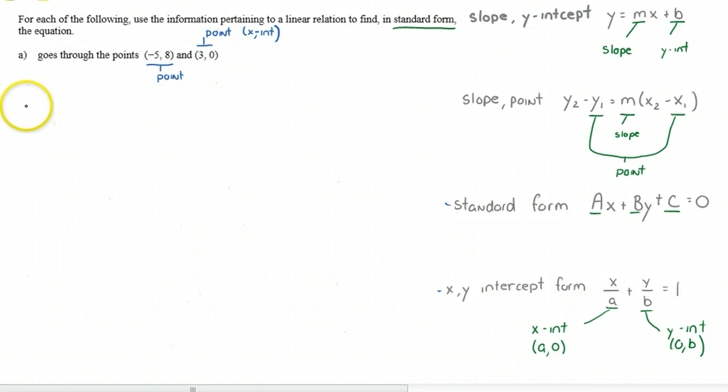So step one, we're going to find the slope. And slope is defined as rise over run. And sometimes people will write that as delta y, which is the change in y over the change in x. Or, more algebraically, y2 minus y1 all over x2 minus x1.